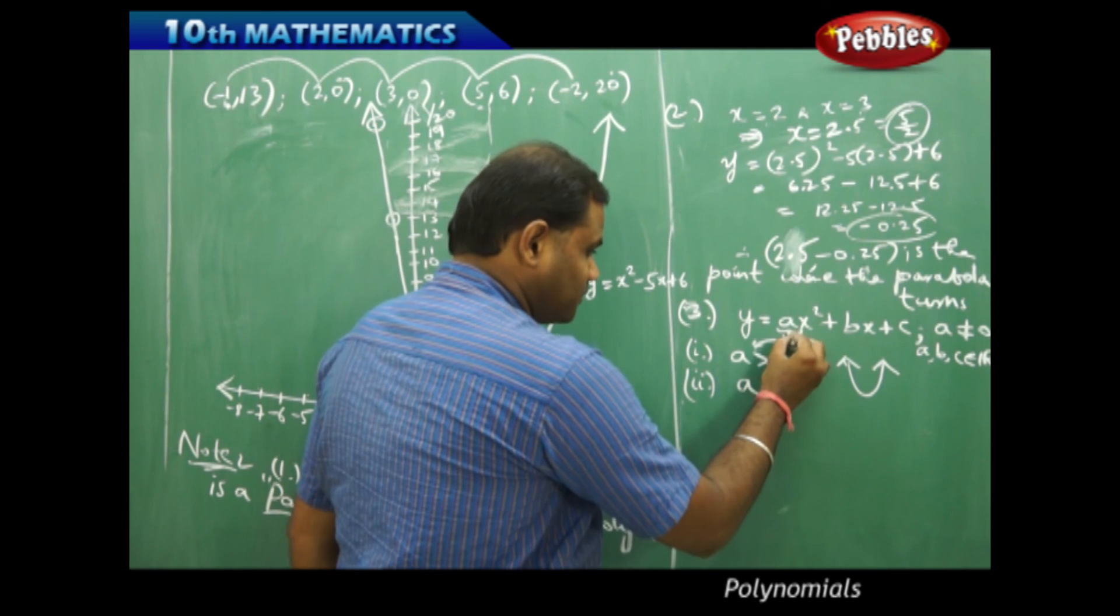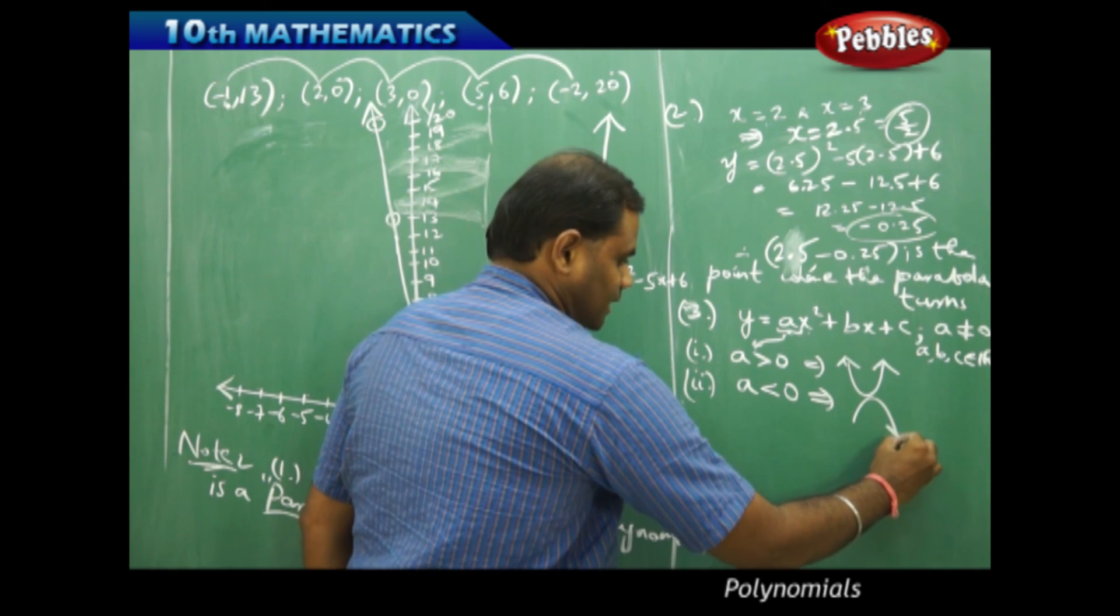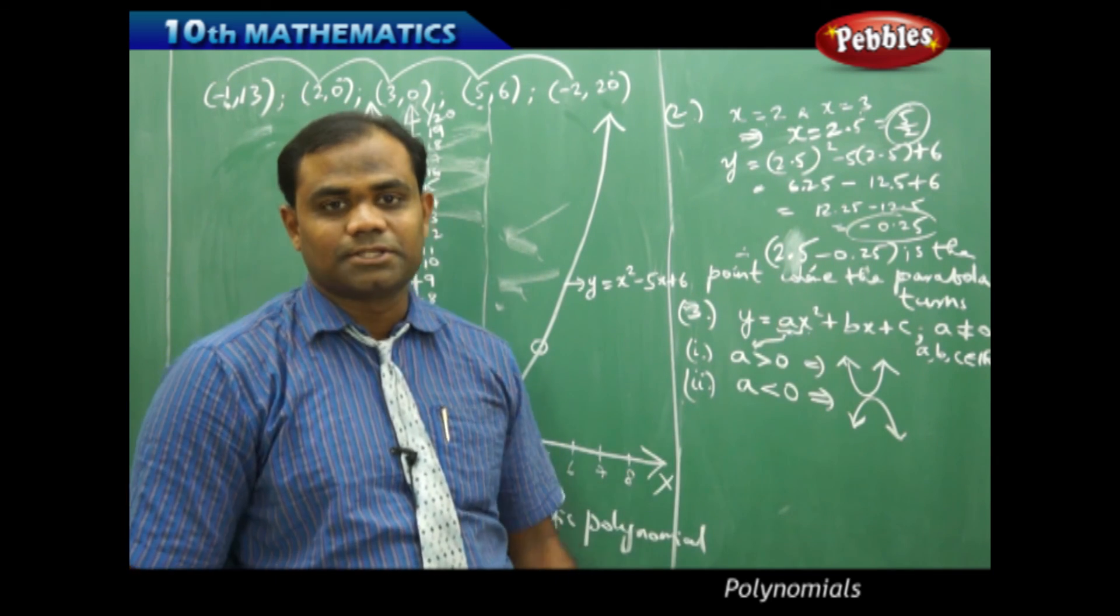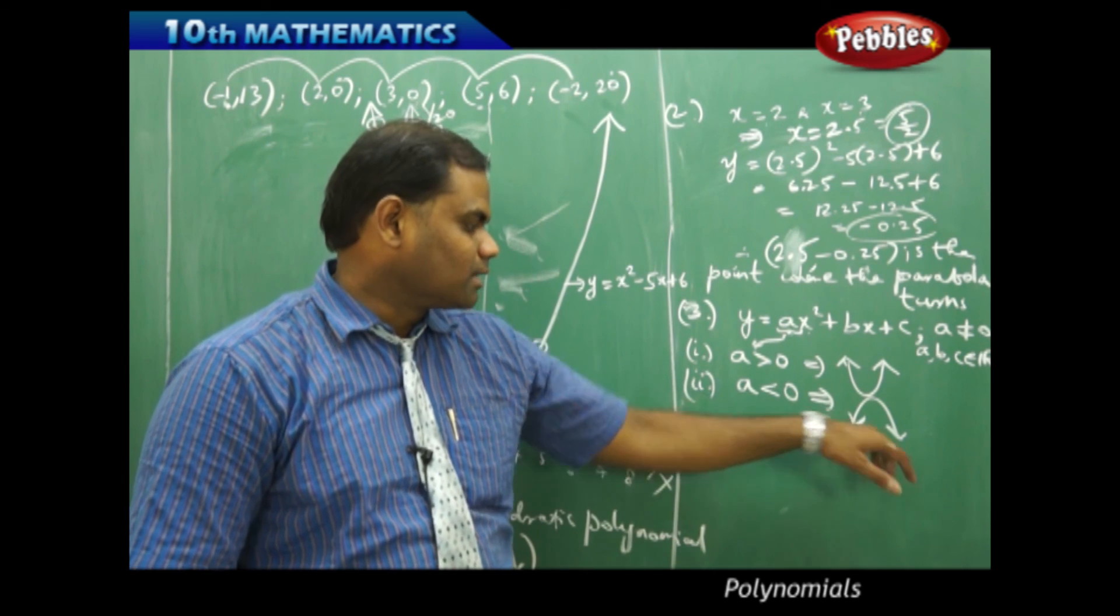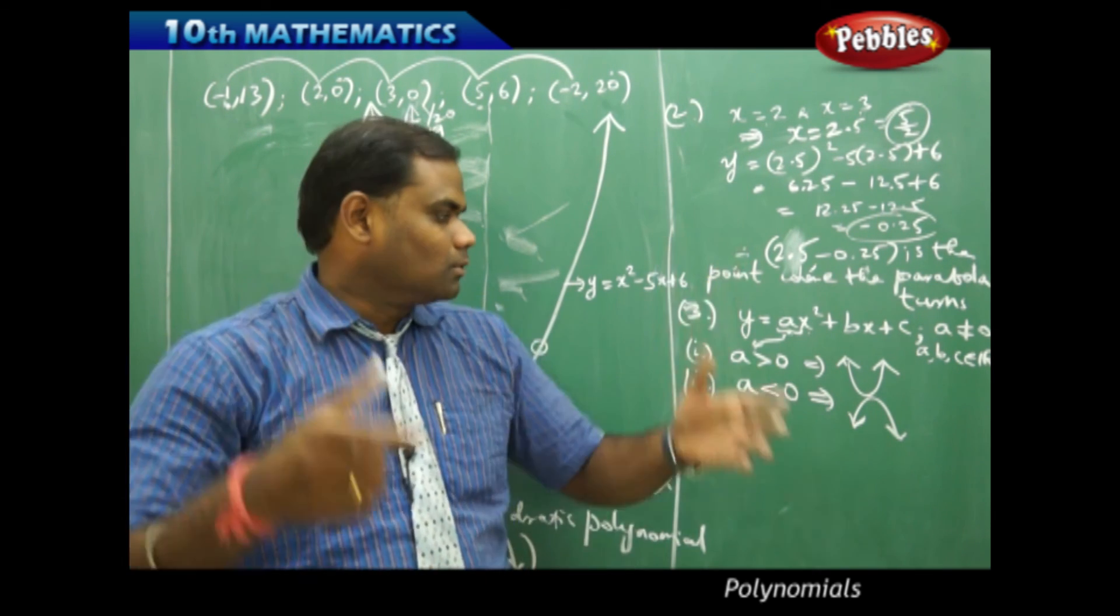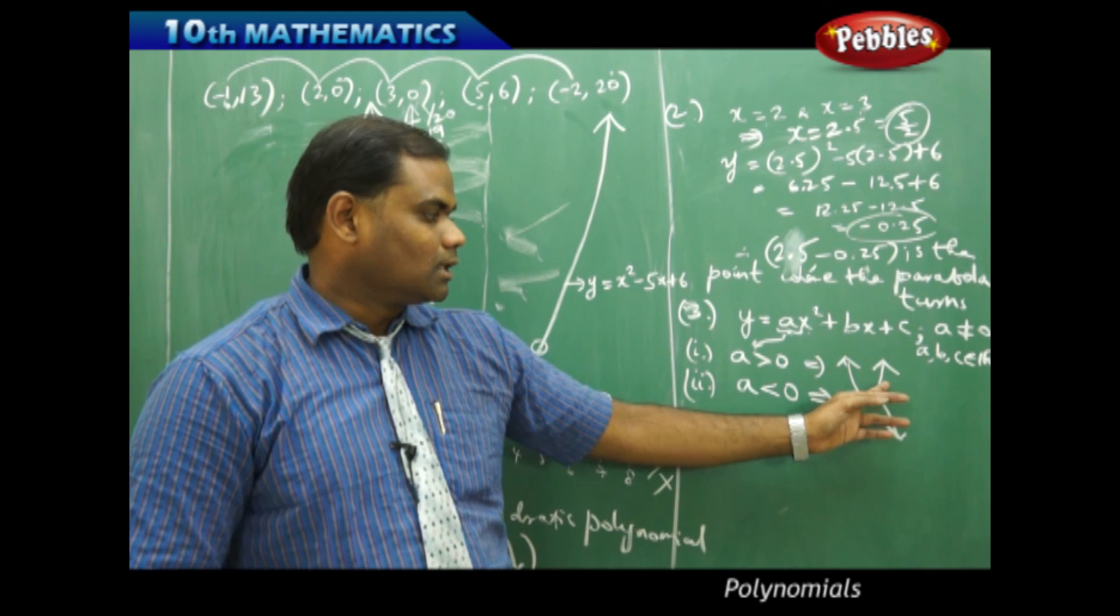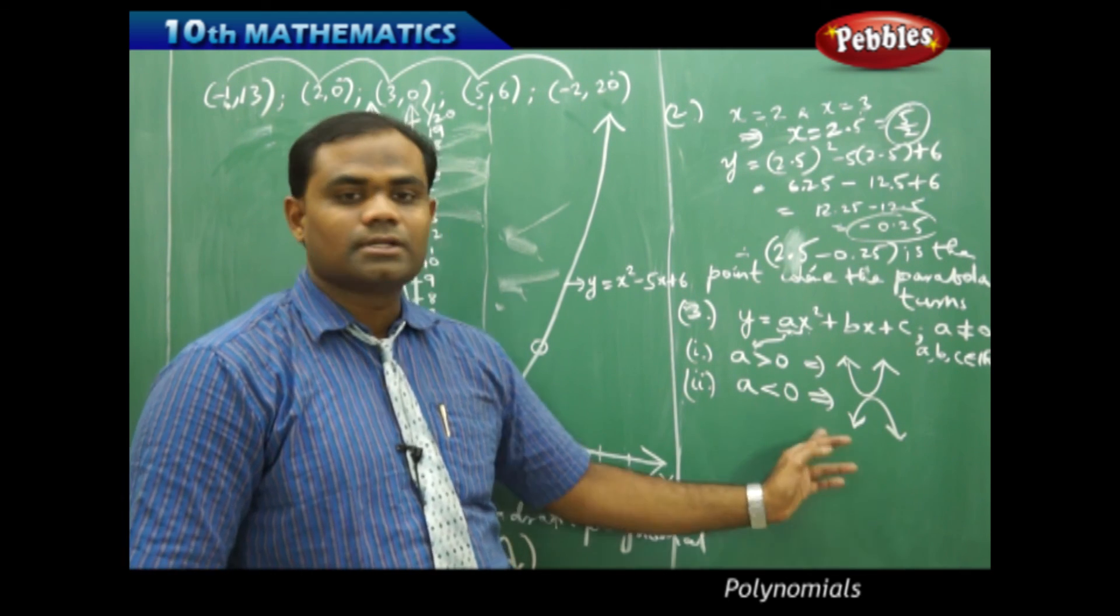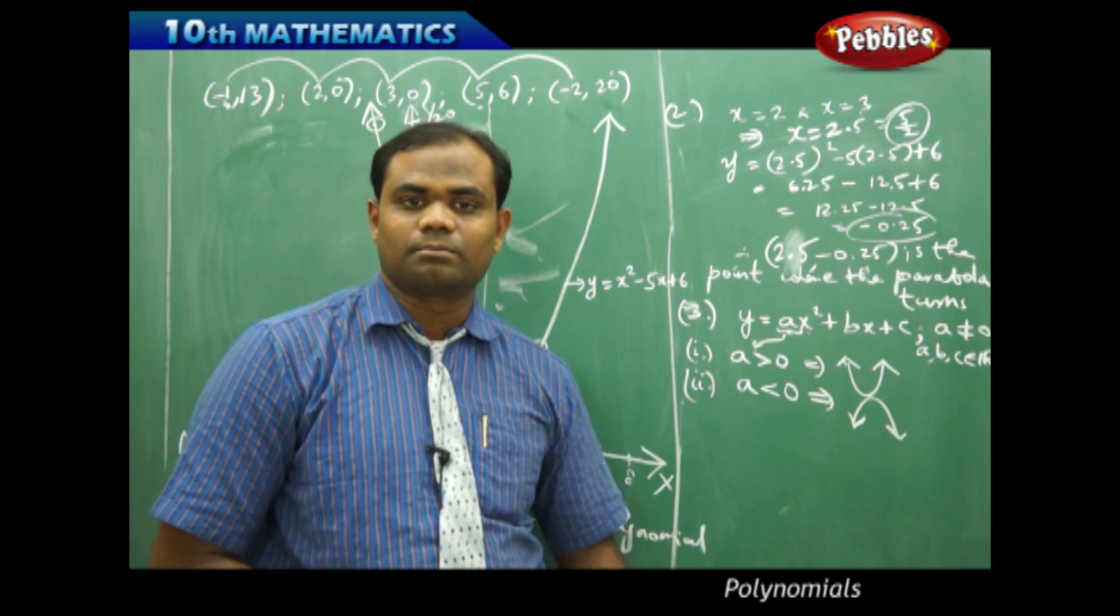Similarly, when my coefficient of x-square which is a is less than 0, then I get an inverted parabola. You can verify by just sketching this with the table of values. You get an inverted parabola when a is negative. We get an upward parabola when a is positive. So, an upward parabola for a greater than 0 and downward parabola when a is less than 0 is how we understand the properties in quadratic polynomials.